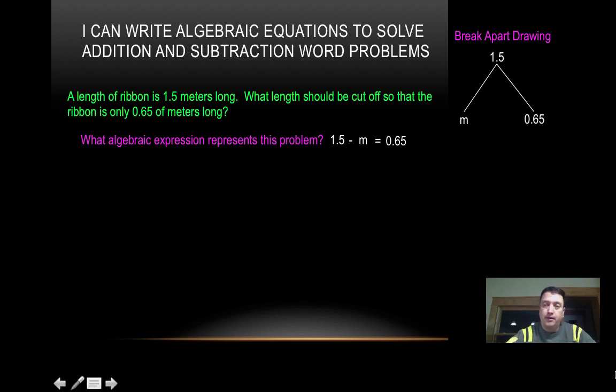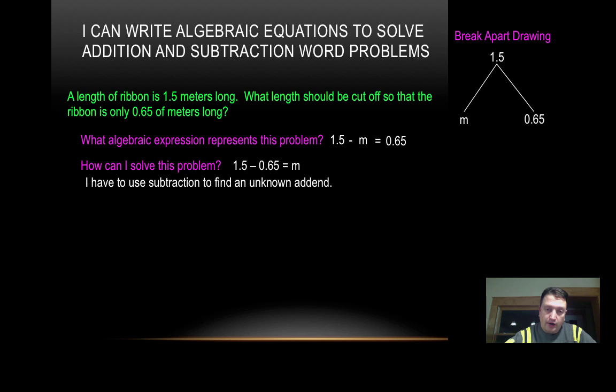Now, there's our break-apart drawing again. Here's our two addends down here with our total at top. Now, how can I solve this problem? Well, I know that one-point-five minus sixty-five hundredths equals something, and that's what I have to figure out. So I have to use subtraction to find an unknown addend in this case.